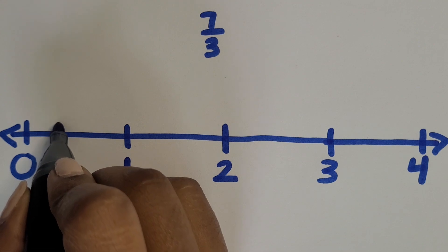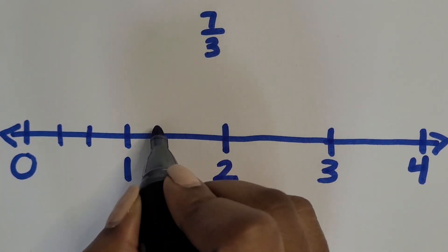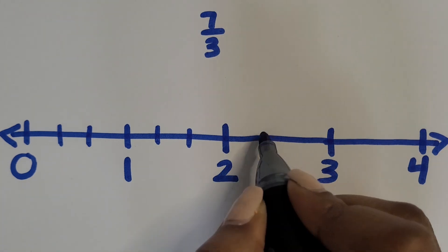Then we're going to partition each hole into thirds and we're going to go from zero all the way to seven thirds.